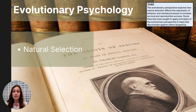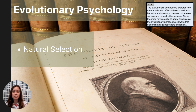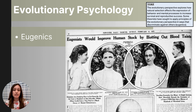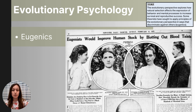Unfortunately, there have been instances in history where elements of this evolutionary perspective have been misused to justify discriminative and harmful behaviors, which is why we need to remember to use ethical considerations in scientific research. The College Board wants AP Psychology students to explain the evolutionary perspective and also explain how it was misused to support a movement called eugenics. The eugenics movement emerged from ideas about genetics and natural selection.